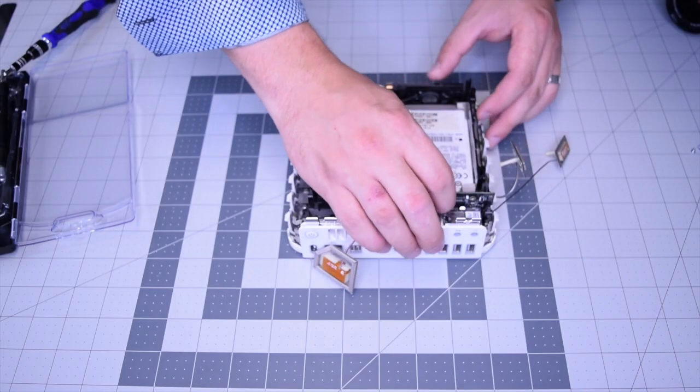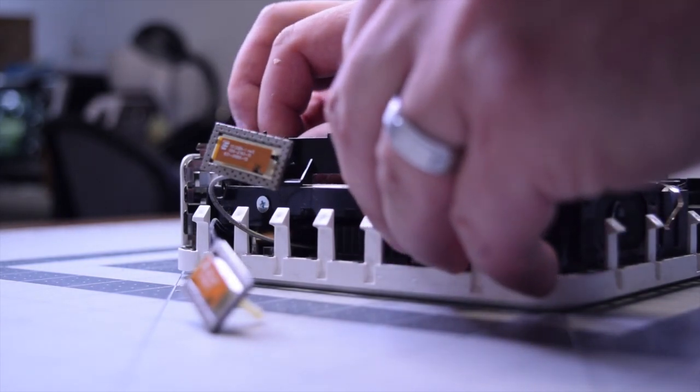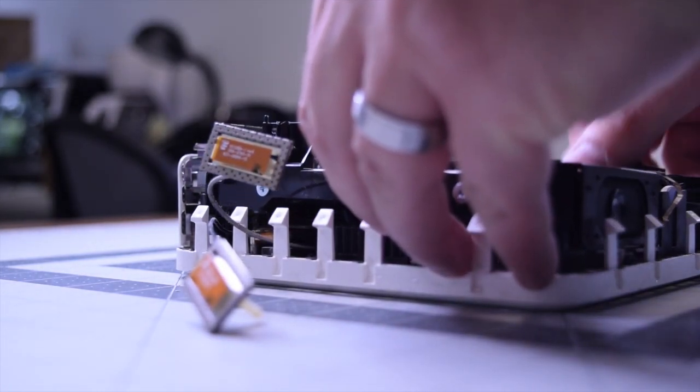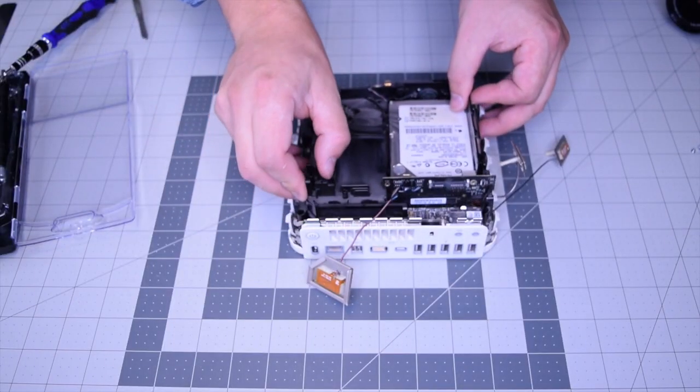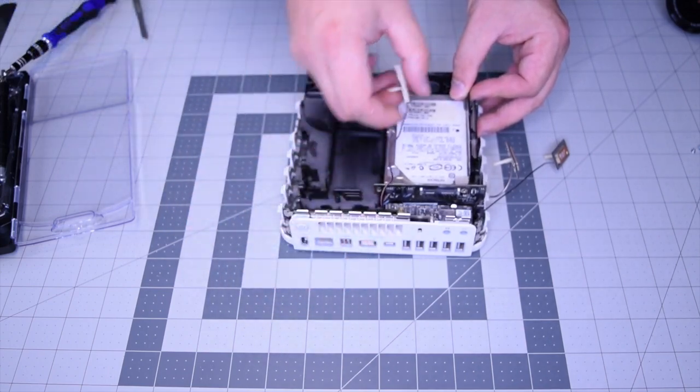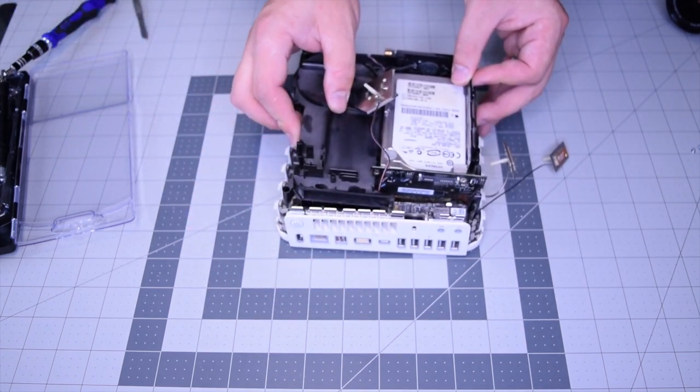With those four screws removed, go ahead and start prying and lifting up. That hard drive and bracket has a bridge that connects it to the logic board, so just gently push it up. One of the antennas might pop out, like this red one that I just moved. It popped out during the removal.